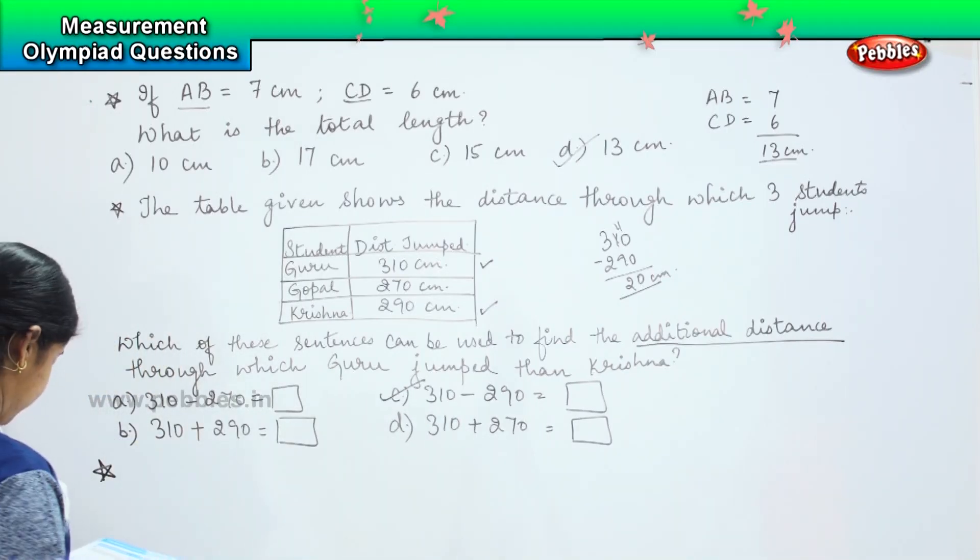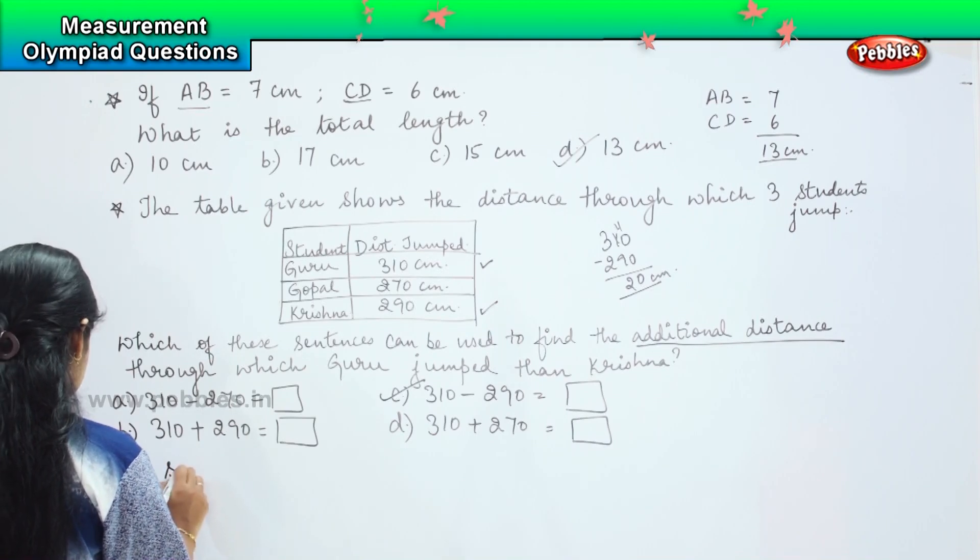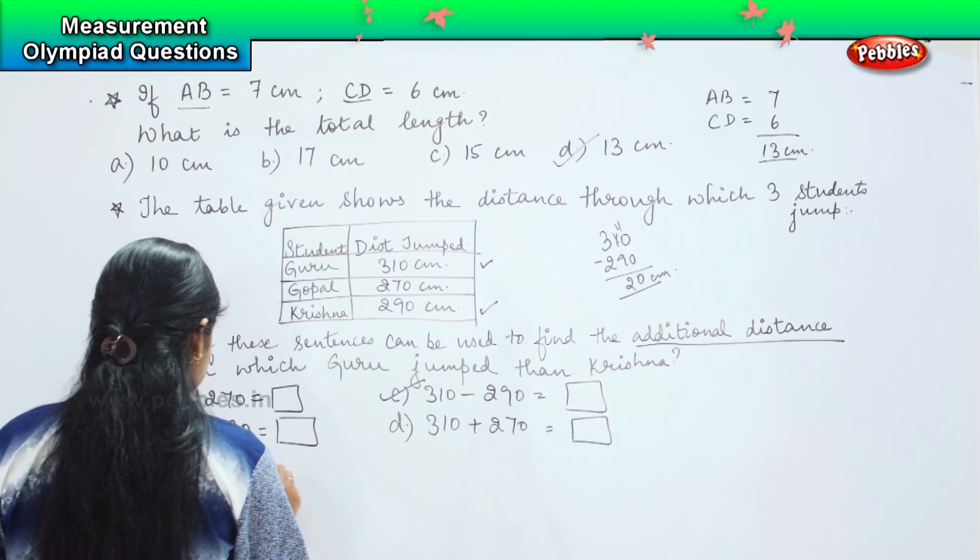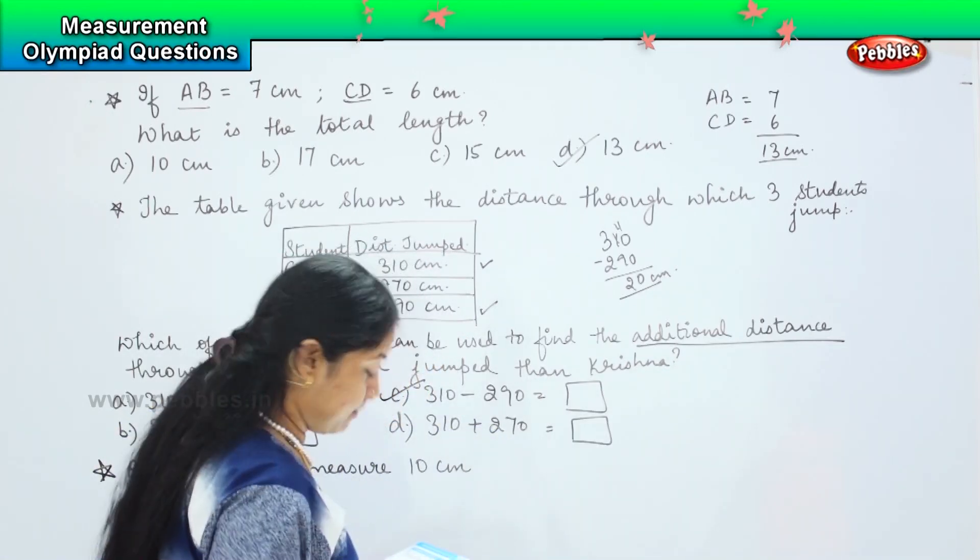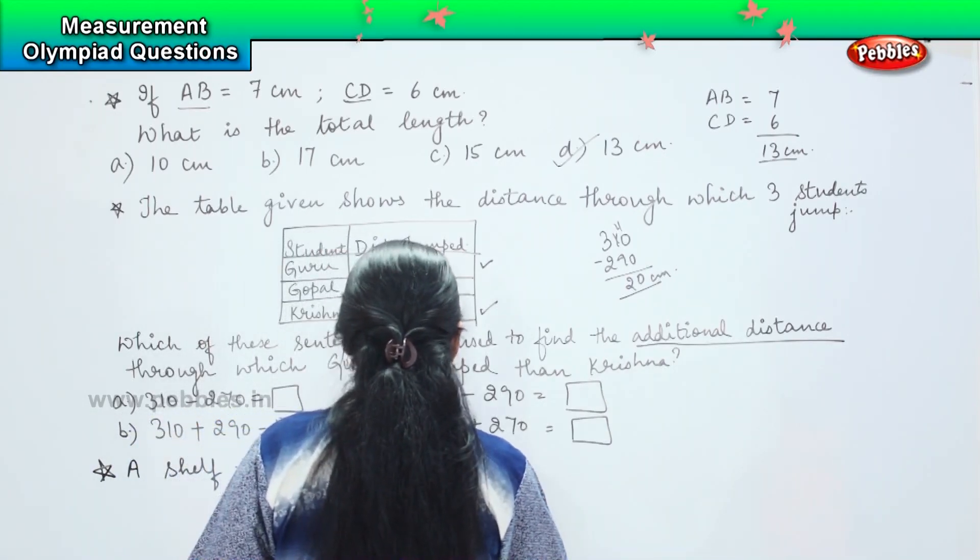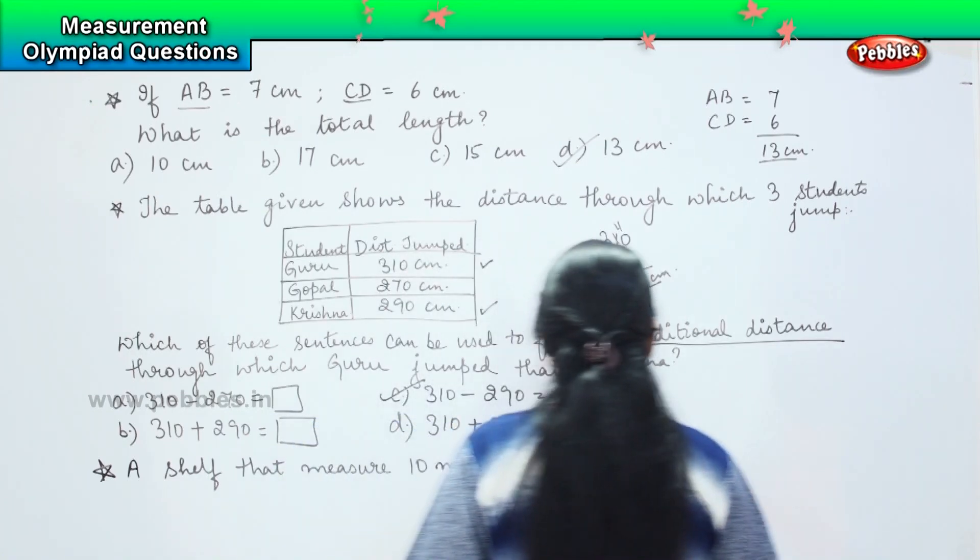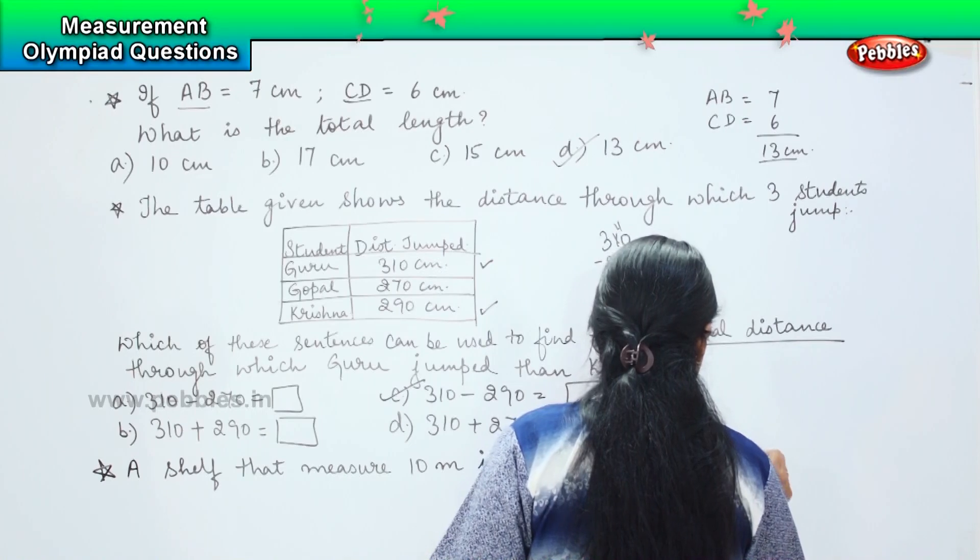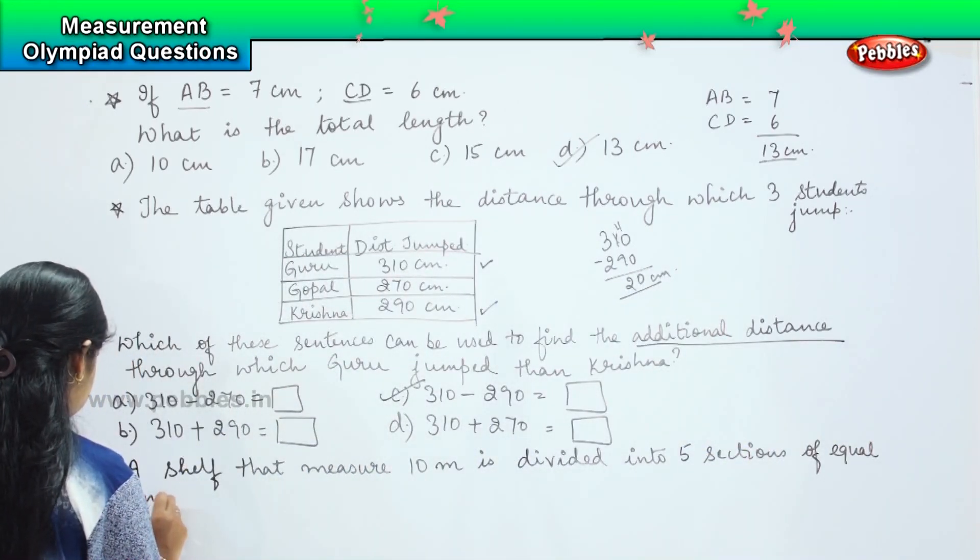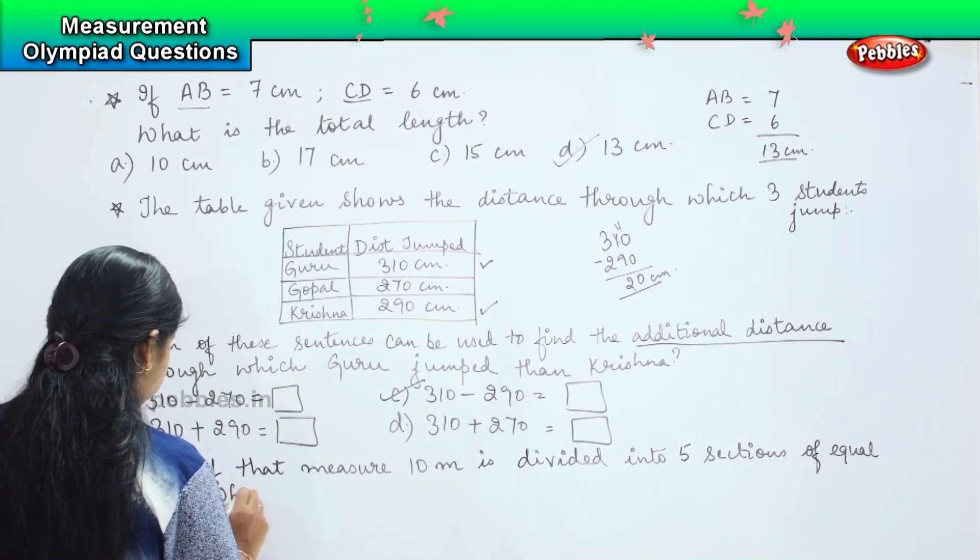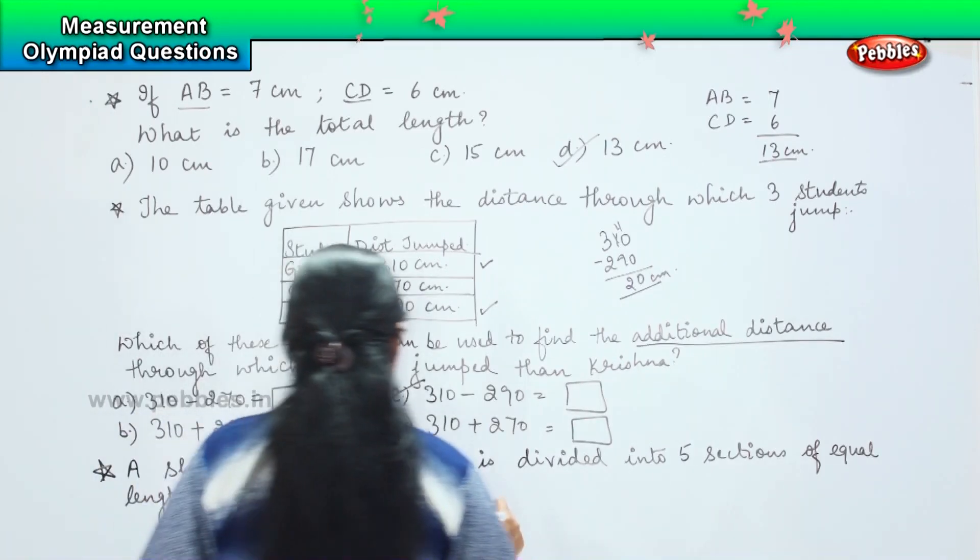The next question is: a shelf that measures 10 meters is divided into 5 sections of equal length. What is the length of each section?